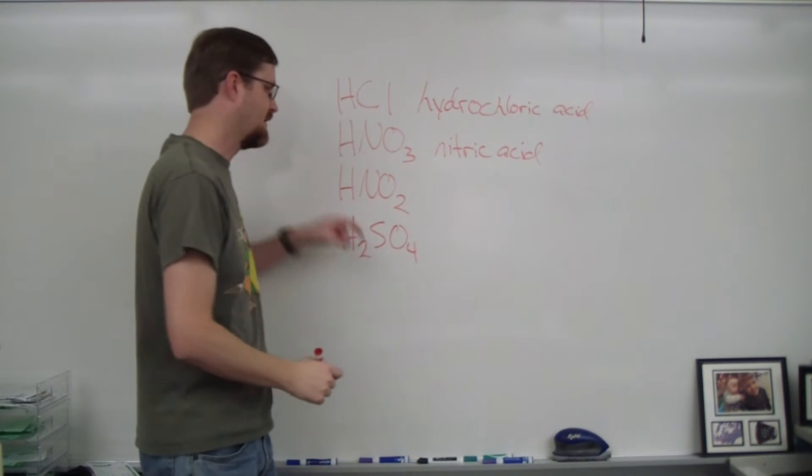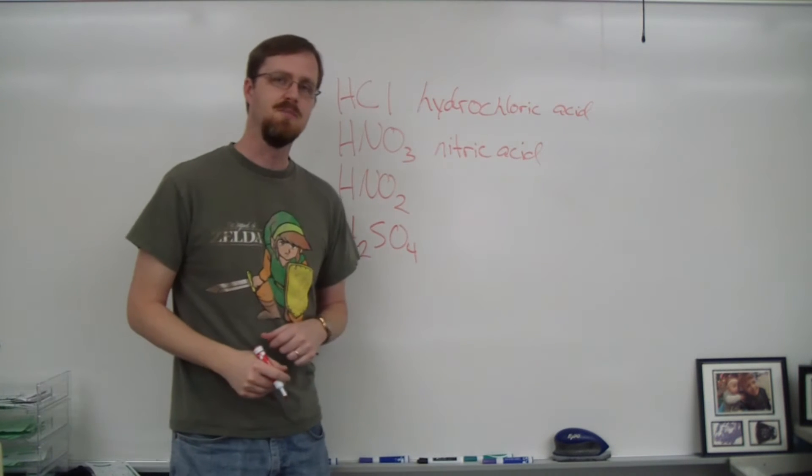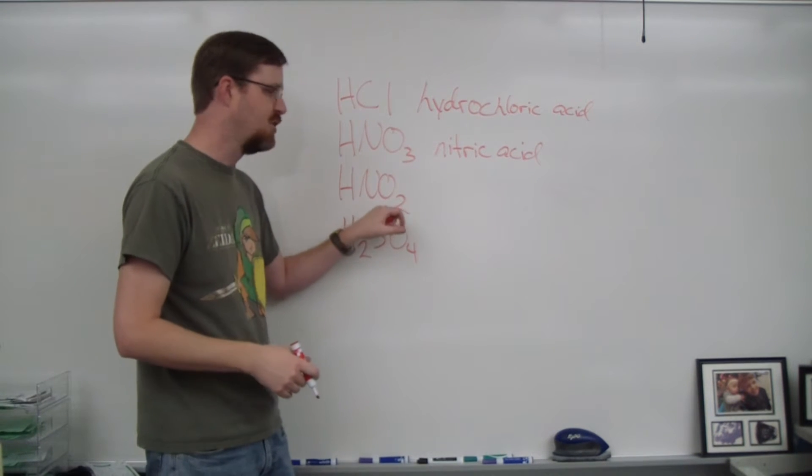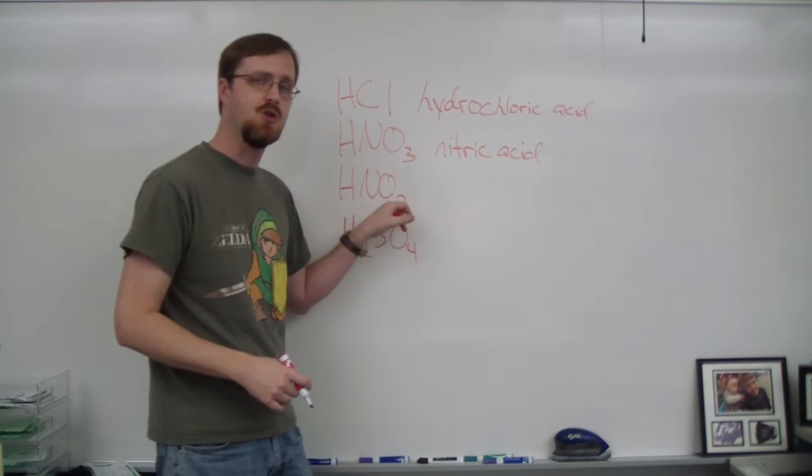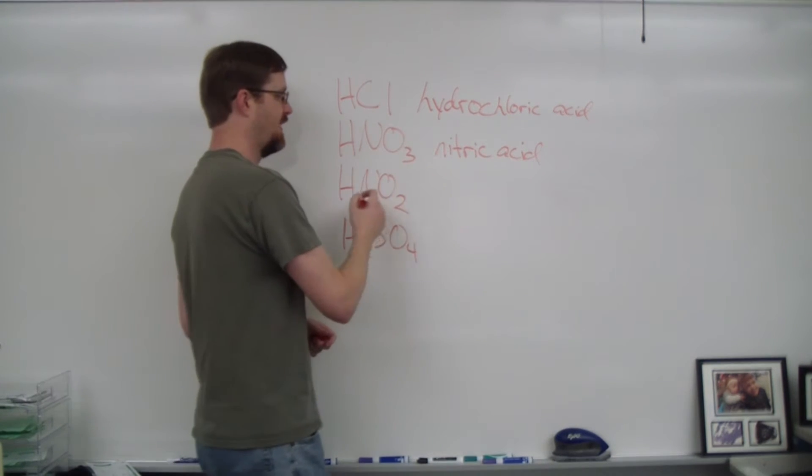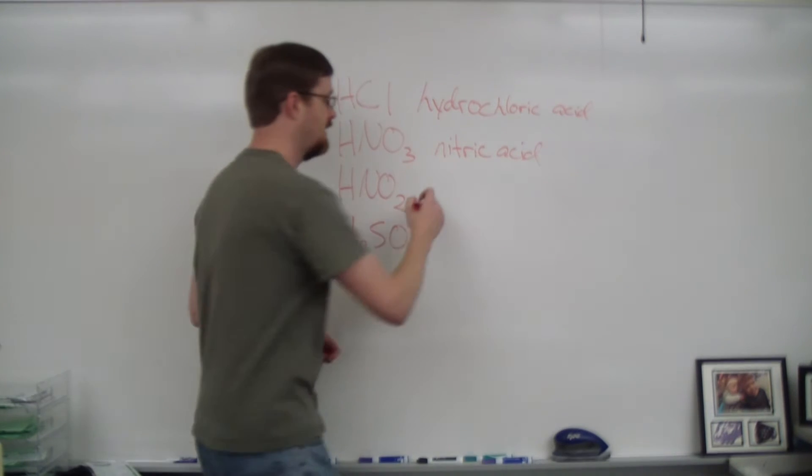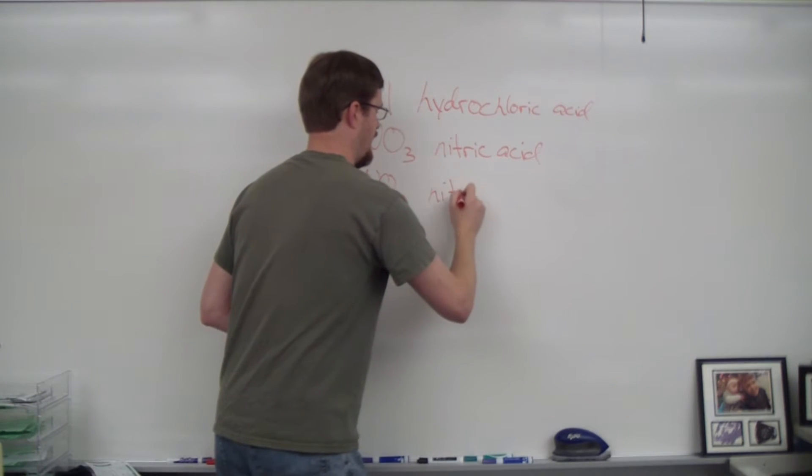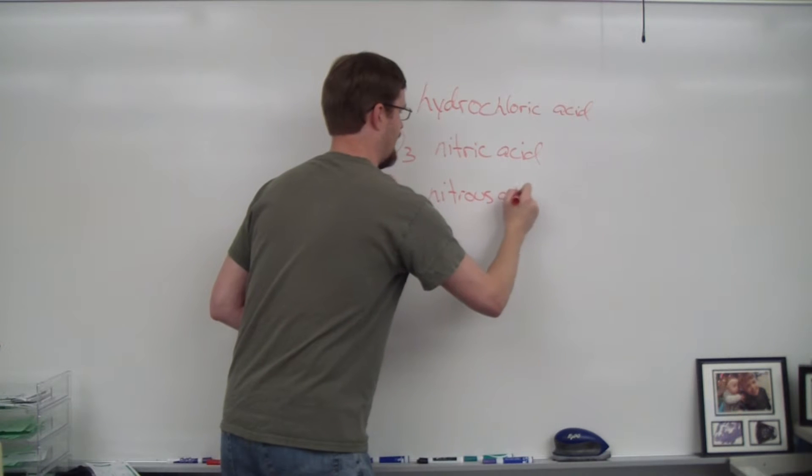Now compare that to this one, which is part of the ites because NO2 is a polyatomic ion, nitrite. Ite becomes Ous. So instead of nitrite, it becomes nitrous acid.